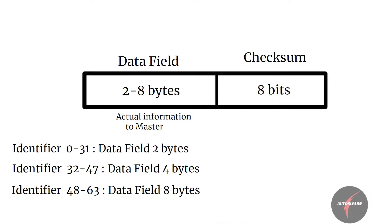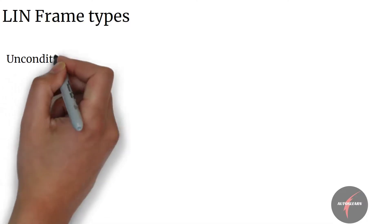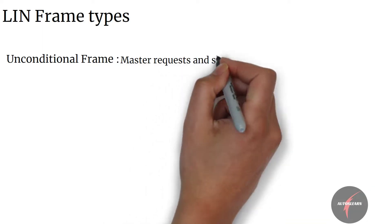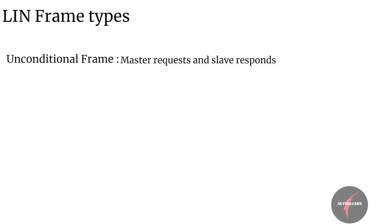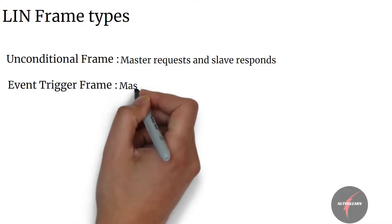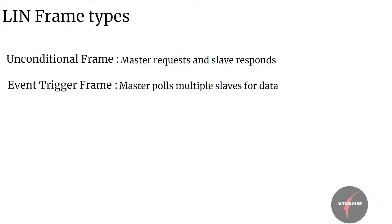Let's look at the different frame types that exist in a LIN network. An unconditional frame is the default form of communication where the master sends a header and the relevant slave responds with specific information. An event-triggered frame is sent when the master polls multiple slaves, and a slave responds only if its data has been updated, including its identifier in the first data byte.